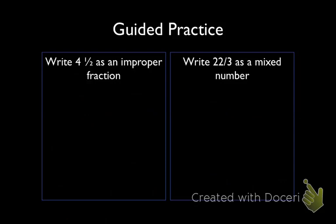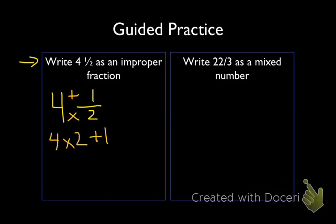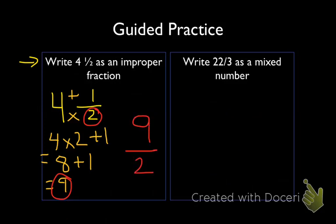Alright, let's go over it. Let's start with the first one, writing 4 and 1 half as an improper fraction. We know we want to multiply the whole number by the denominator, and then add it to the numerator. So that becomes 4 times 2 plus 1. 4 times 2 is equal to 8, plus 1, that's going to be 9. Then we're going to take that number and put it over our original denominator. So 4 and 1 half becomes 9 halves, or 9 over 2.